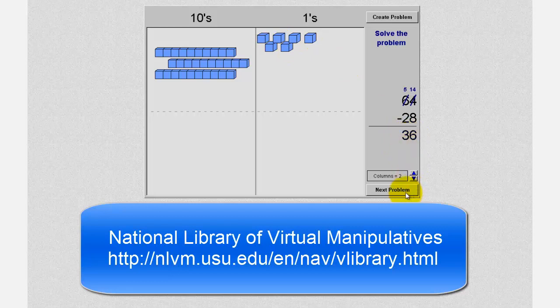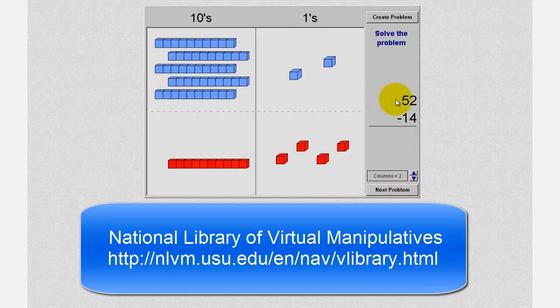Let's take a look at a second example. Here we have 52 minus 14. Again, we start with the 1 block, so the 1's place value. And again, we can't take away four blocks from two blocks, so we have to perform an exchange using a blue 10 block. So we'll take one blue 10 block and move it to the 1's place value, giving us a total of 12 1 blocks.